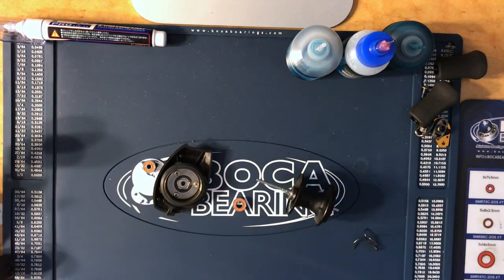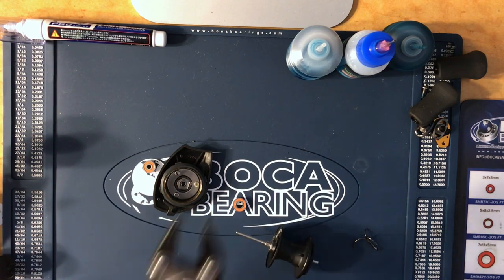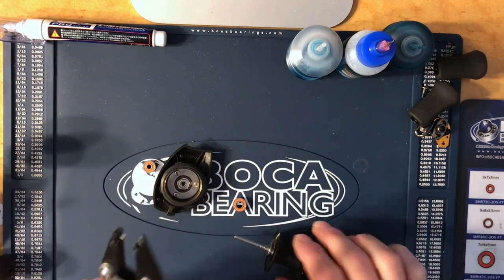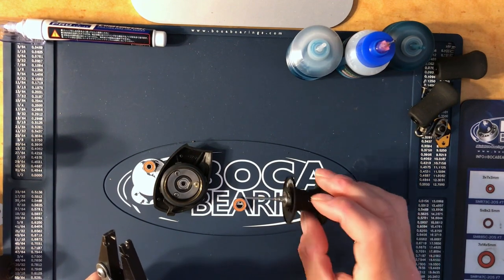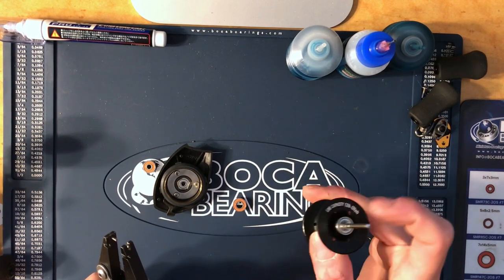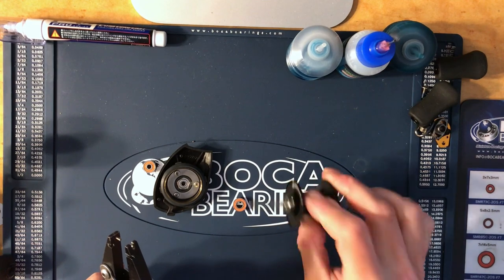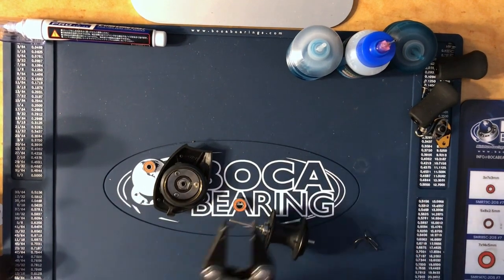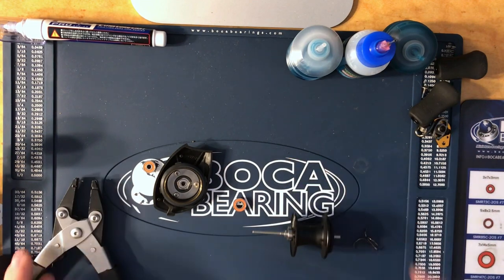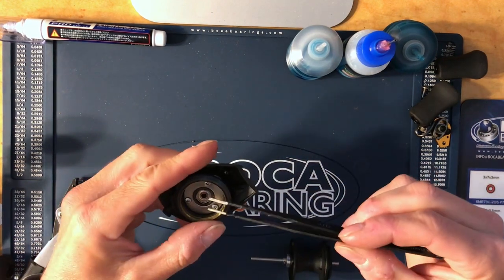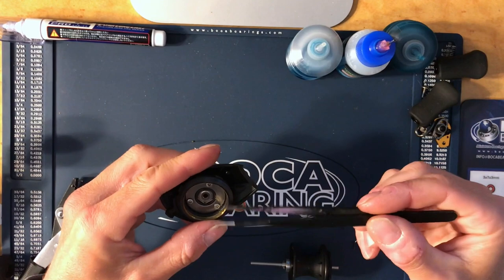You're also going to need a set of spool pin pliers. If you do 13 Fishings, if you do Abu's, any reel that has a bearing on the shaft, you're going to need the spool pin pliers to take the pin off and slide the bearing off. I also use a pair of tweezers to get the clips off the side plate.